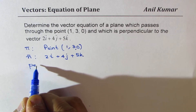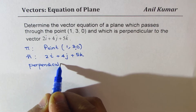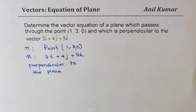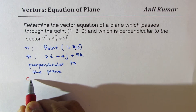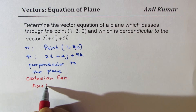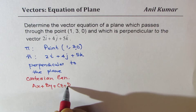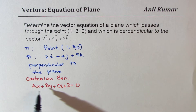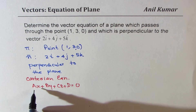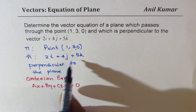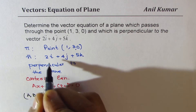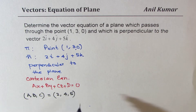This vector 2i plus 4j plus 5k is perpendicular to the plane — in other words, it is the normal vector. We have the standard Cartesian form of a plane: ax plus by plus cz plus D equals 0, where a, b, and c are the coefficients of the normal vector. So a, b, and c are directly the values 2, 4, and 5.